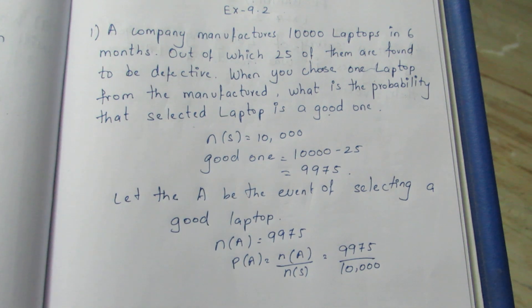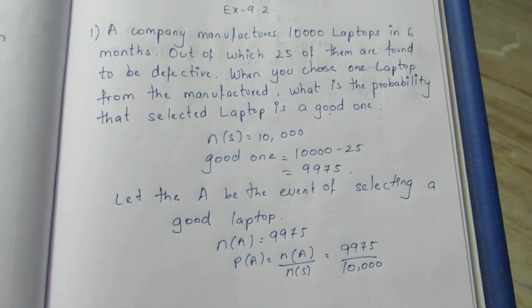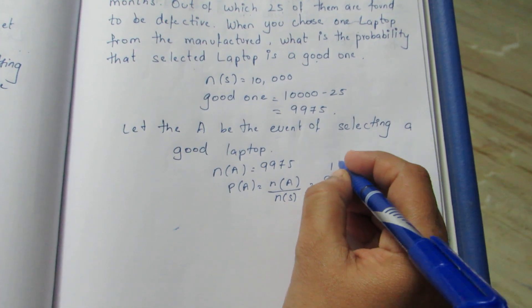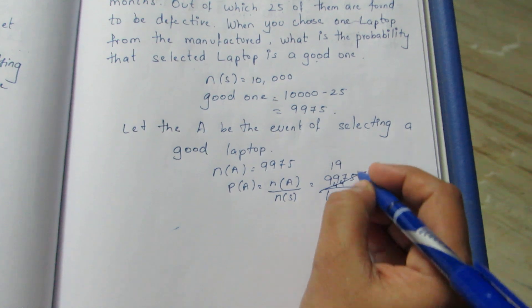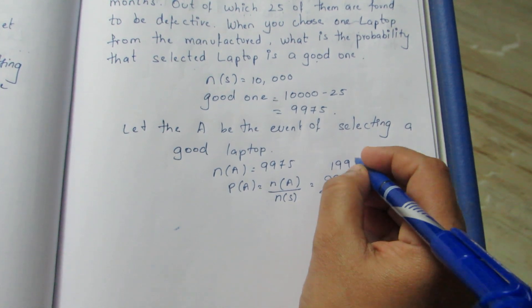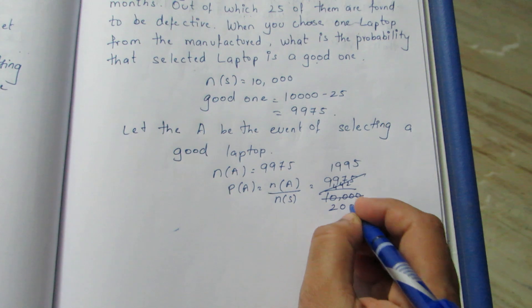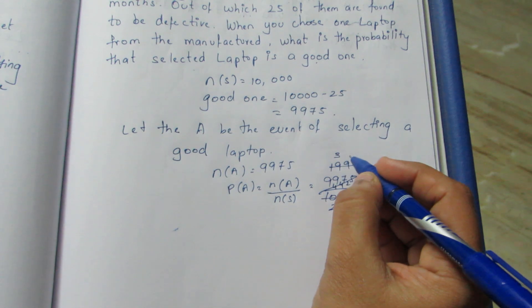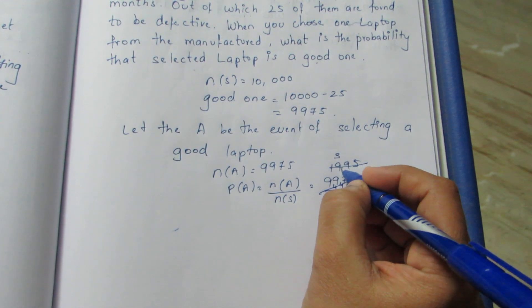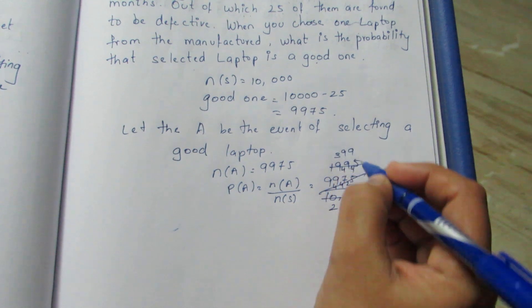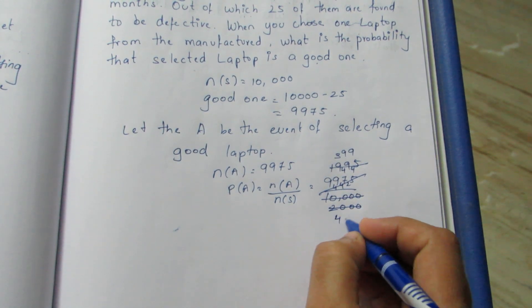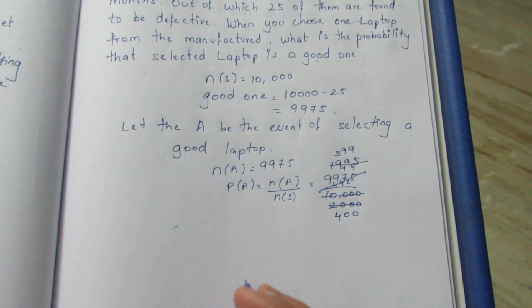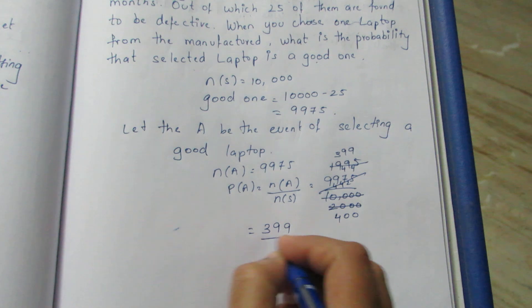Now we simplify — 5 tables cancel. Dividing both numerator and denominator by 25, we get 399 by 400.